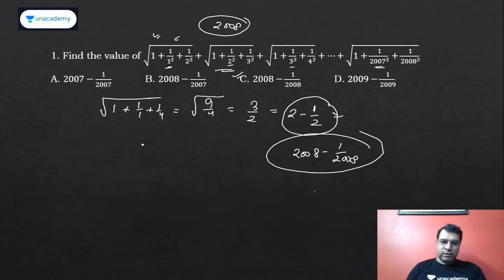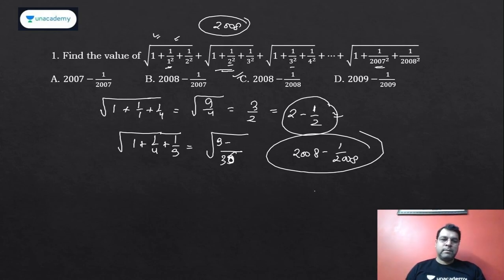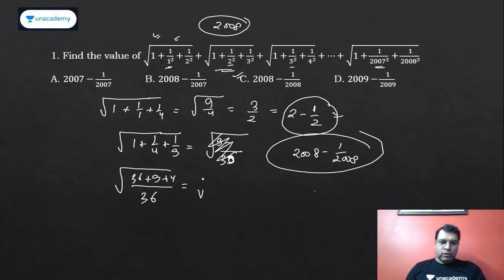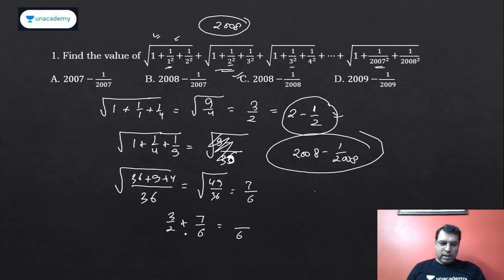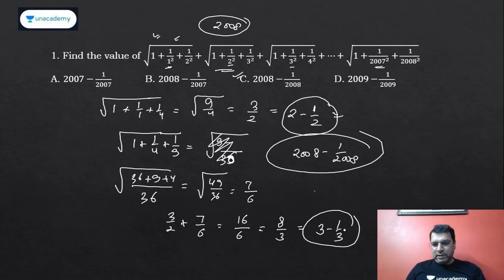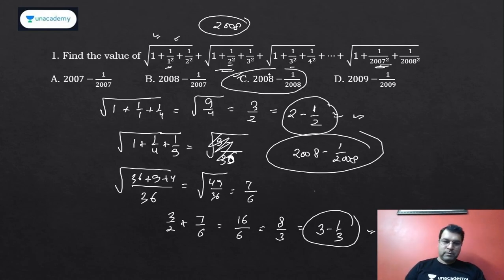The second term would be √(1 + 1/4 + 1/9) = √(49/36) = 7/6. The sum of two terms is 3/2 + 7/6 = 16/6 = 8/3, which can be written as 3 minus 1/3. So one term → 2 minus 1/2, two terms → 3 minus 1/3. You just need to do n+1. For 2007 terms, the answer is 2008 minus 1/2008.